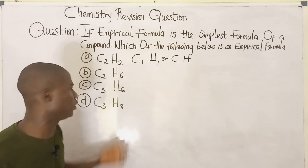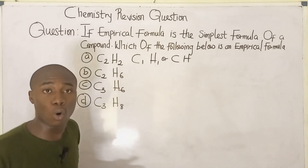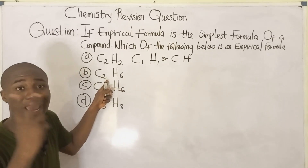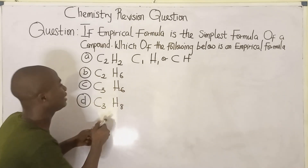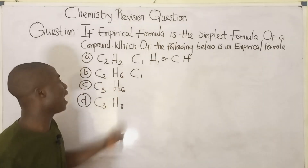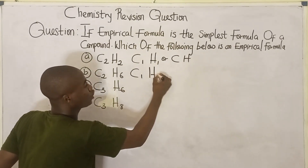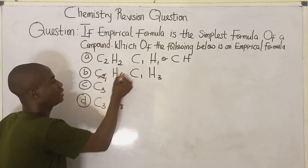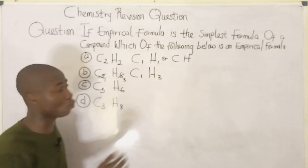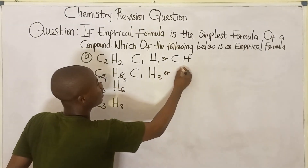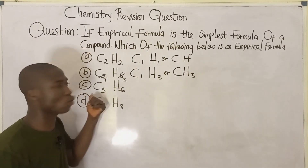Now let's examine option B, which is C₂H₆. Is this the simplest form this compound can exist? No. I can divide through by 2: 2 divided by 2 gives 1, and 6 divided by 2 gives 3. So what we get is CH₃. Since it can be reduced, C₂H₆ is not the empirical formula.